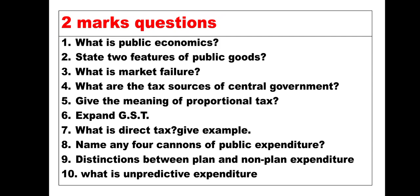We are going to discuss the first two-marks questions. What is public economics? This question continues to appear three consecutive years. Next, state two features of public goods. What is market failure? What are the tax sources of central government? Give the meaning of proportional tax. Expand GST. What is direct tax? Give an example. Name any four canons of public expenditure. Distinguish between plan and non-plan expenditure. What is unproductive expenditure?